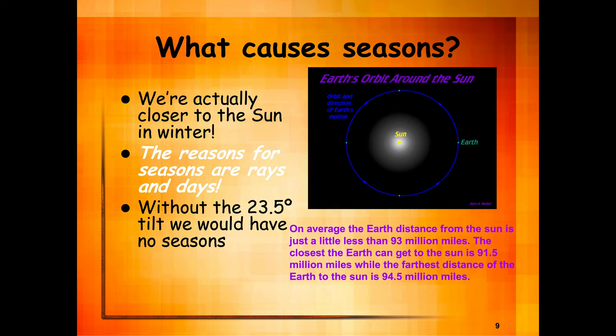Without the 23.5-degree tilt, there would be no seasons — we'd just have fall- or spring-like weather year-round, with 12 hours of day and 12 hours of night all year as Earth orbits the sun. If you like seasons, you can thank the collision that formed the moon — that's what we think caused the 23.5-degree tilt. We'll discuss that a bit later.